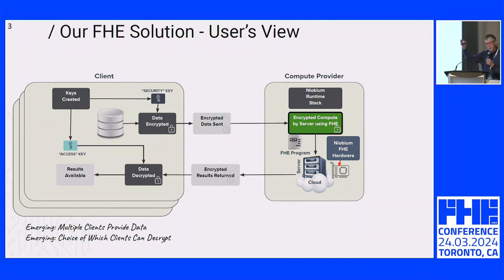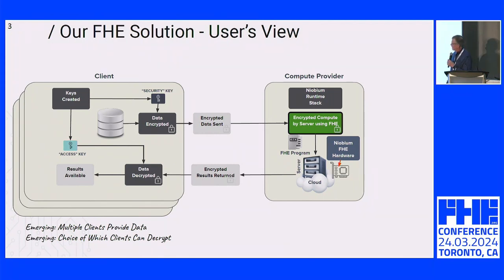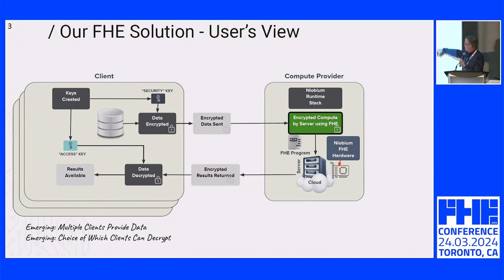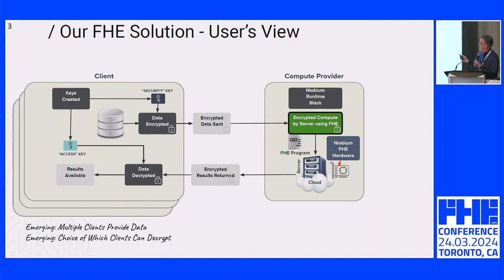It's going to be many parties that have data that want it computed on together. But the simplified view is that a client has data, generates keys, sends the encrypted data and evaluation keys to the server. The server then uses either regular processors or hardware acceleration to process the data and returns encrypted results. We've seen this a few times today.